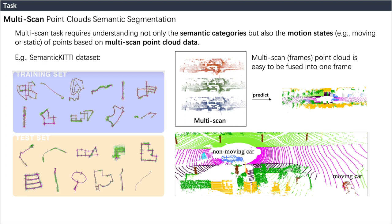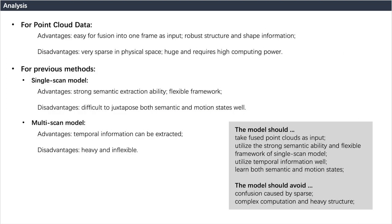It is worth mentioning that multi-frame point clouds can be easily fused into a point set to represent the input. This allows 3D representations of point clouds to describe shapes well. However, the sparsity of point clouds makes their representations unstable and difficult to align across different frames.